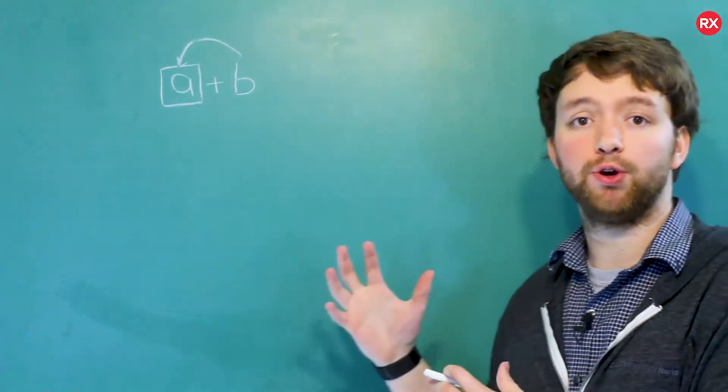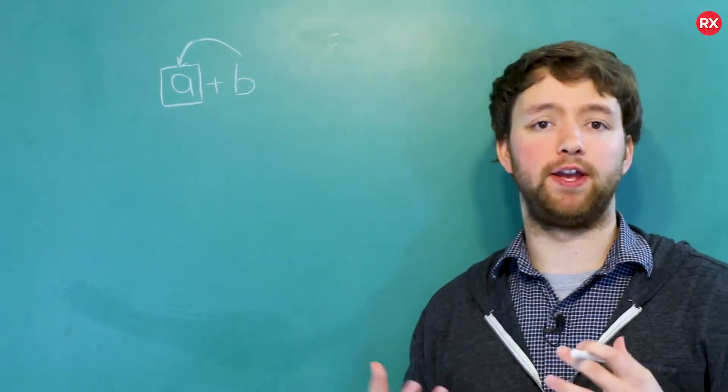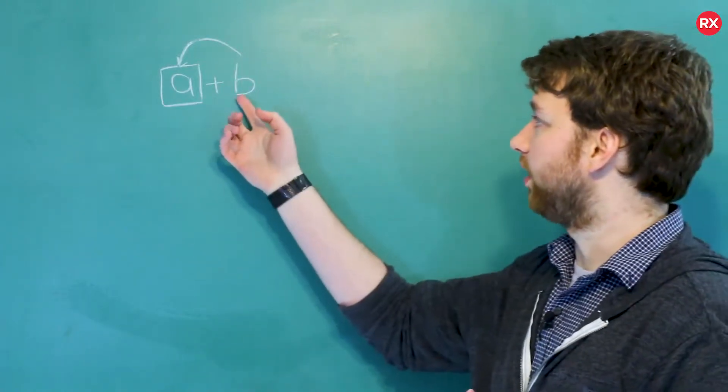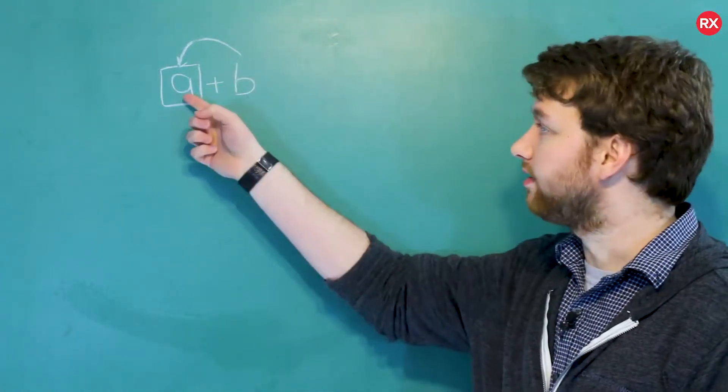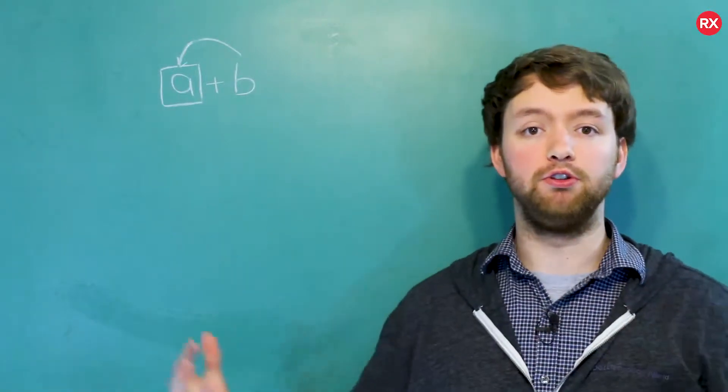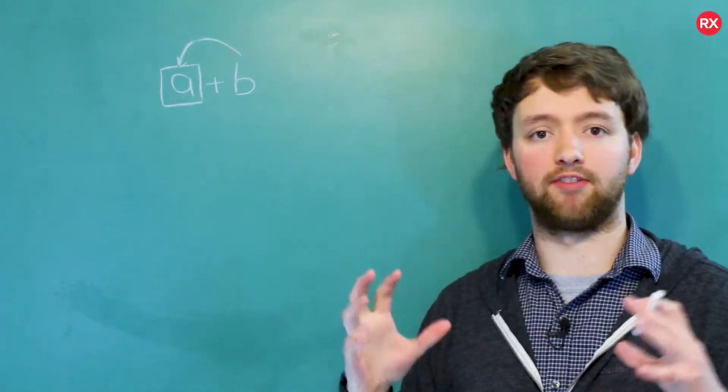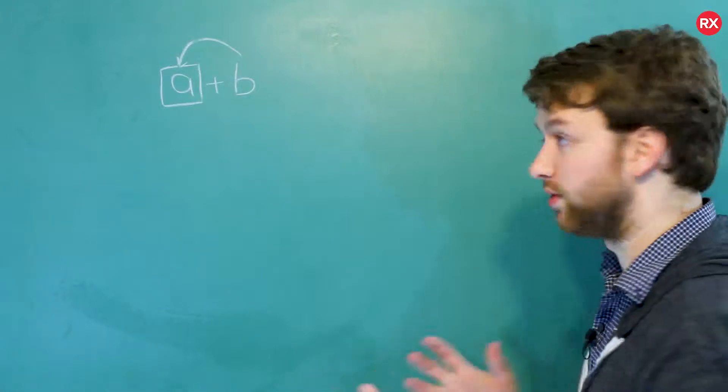So how do we actually overload an operator? It's very similar to a function. Think of what this is doing. It's taking B as an argument, it's adding it to A, and it's going to return a new point where the X and Y's have been added together. So it's going to look like this.